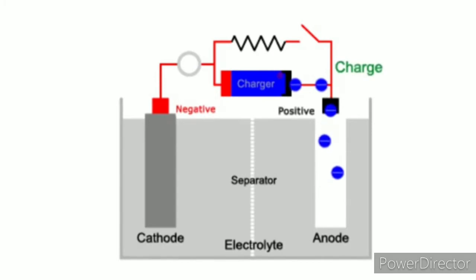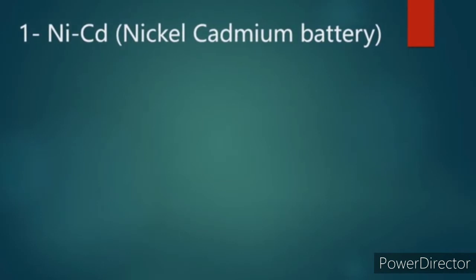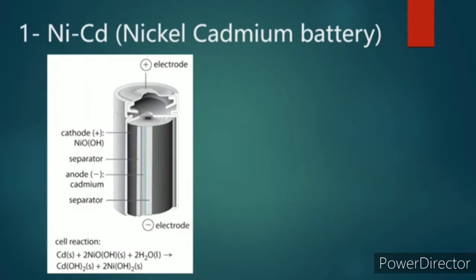We have some examples of secondary cells. Our first example is the nickel cadmium battery. The active components of a rechargeable nickel cadmium battery are nickel hydroxide at the cathode and cadmium at the anode. For the electrolyte, usually potassium hydroxide is used.